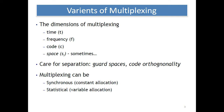What care needs to be taken while any multiplexing technology is used? The care for separation requires a guard space and code orthogonality. These special precautions must be taken while designing a multiplexing system for baseband data transmission or baseband digital transmission.